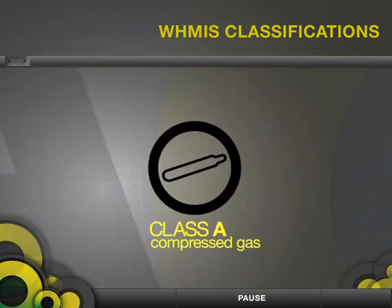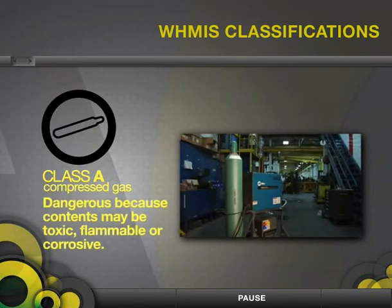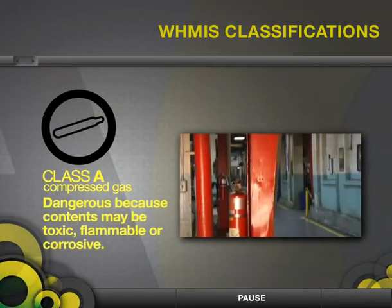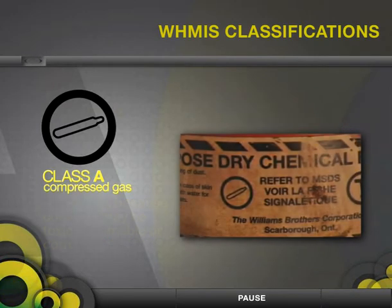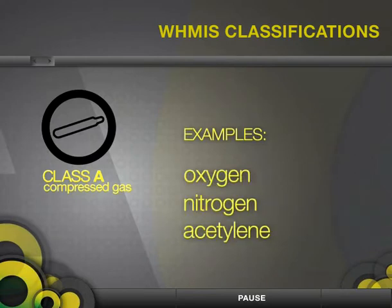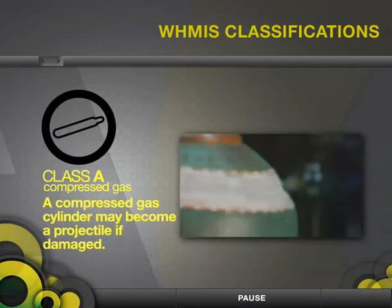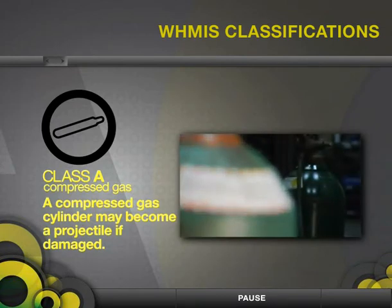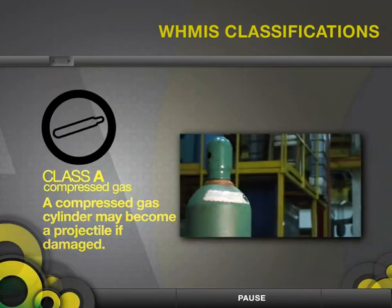Class A products are compressed gases. Compressed gases may be dangerous because of the contents, since they may be toxic, flammable, or corrosive. Examples of Class A compressed gases are oxygen, nitrogen, acetylene, and even the fire extinguishers found at your workplace. A compressed gas cylinder may become a projectile if the cylinder or regulator is damaged due to the high pressure within the cylinder.